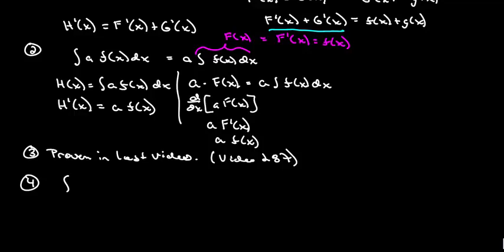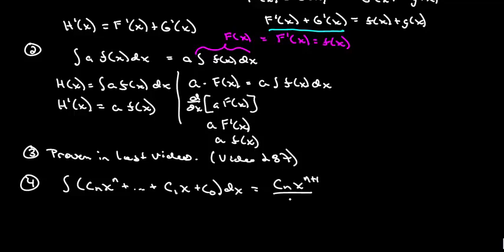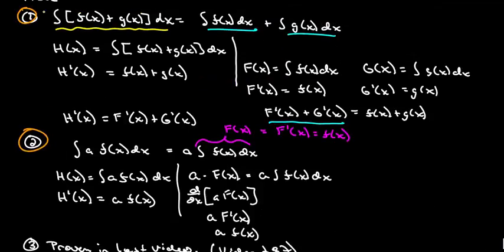The last one is the polynomial rule, which says if we integrate c sub n times x to the n plus all the way down to c sub 1 times x plus c sub 0 dx, we can split this up. We want to show that's equal to c sub n times x to the n plus 1 over n plus 1, all the way down to c sub 1 times x squared over 2, plus c sub 0 times x, plus a constant of integration. Using rule number one, we can break all the terms up.